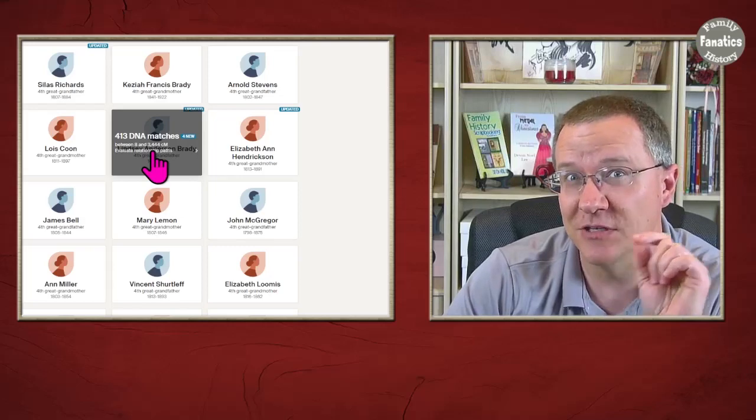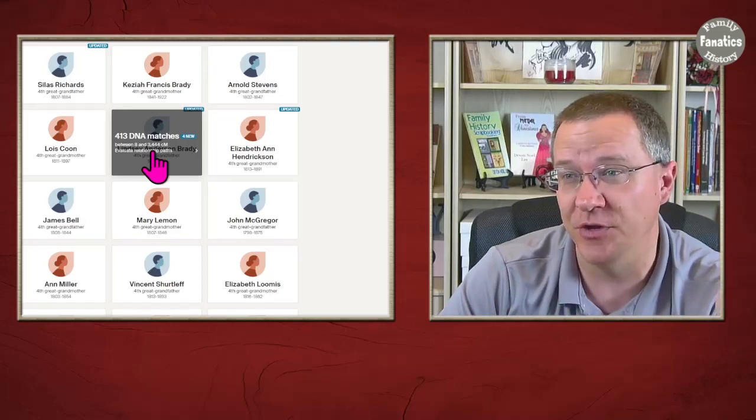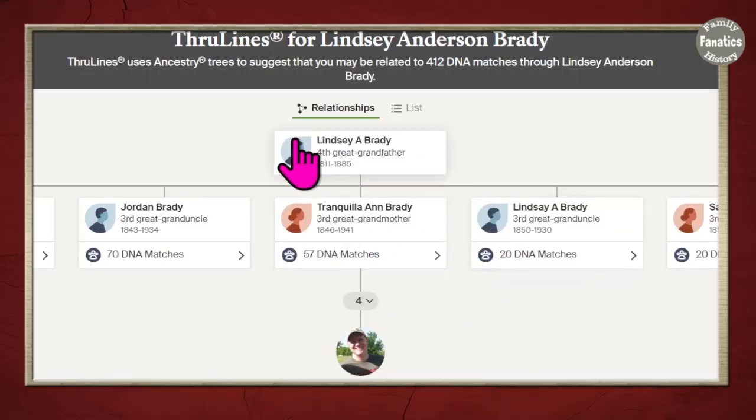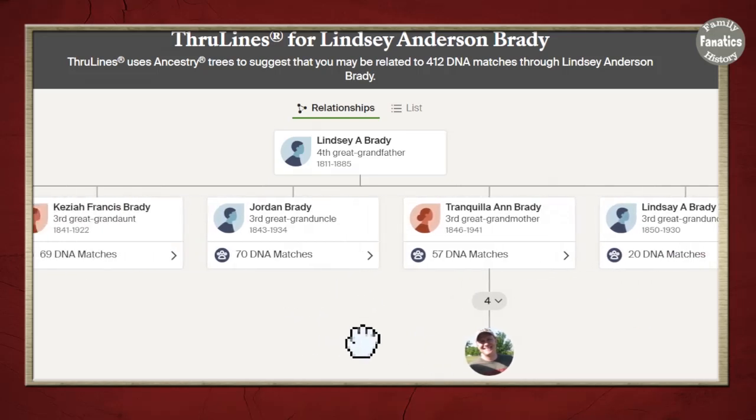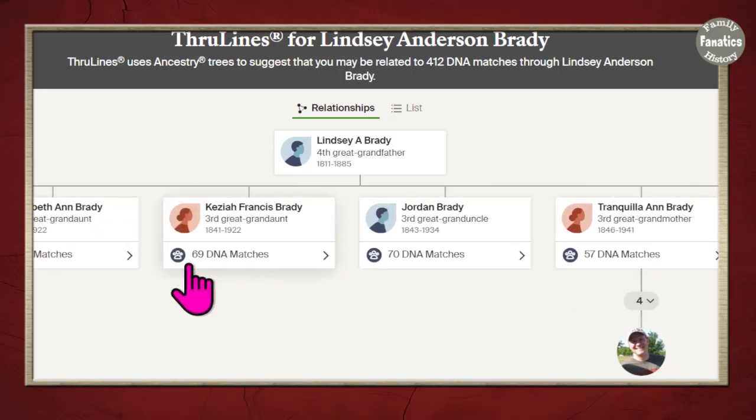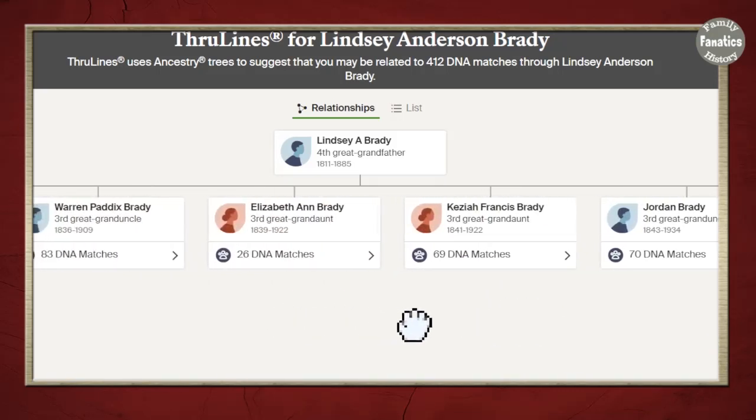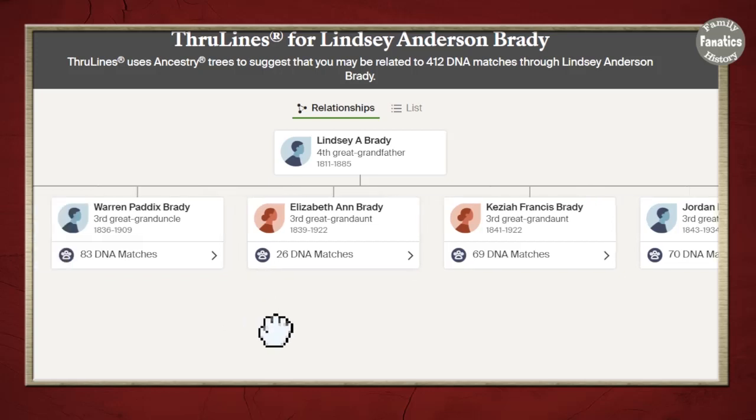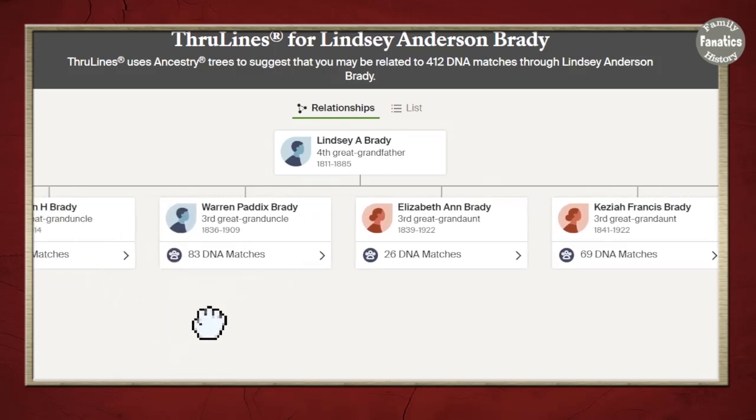Let's go in and actually look at how these are distributed. All right, so taking a look at ThruLines, you can see here through Tranquilla Ann I have 57 matches, through Lindsey Brady I have 20 matches which is the son of Lindsey Brady, Jordan I got 70, Keziah I got 69, Elizabeth I got 26, Warren I got 83.